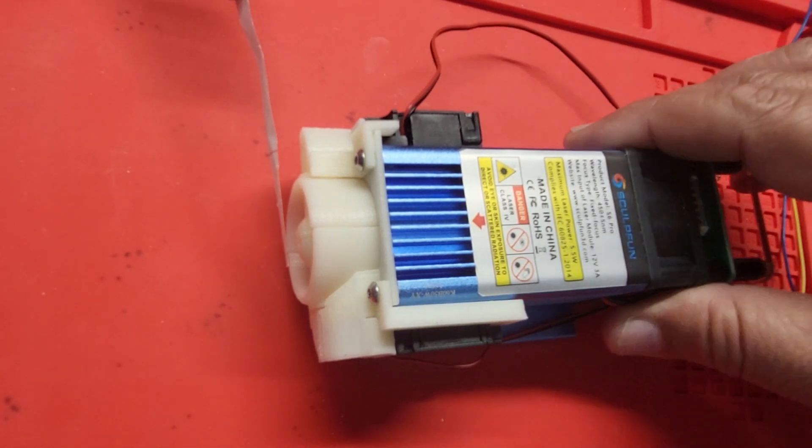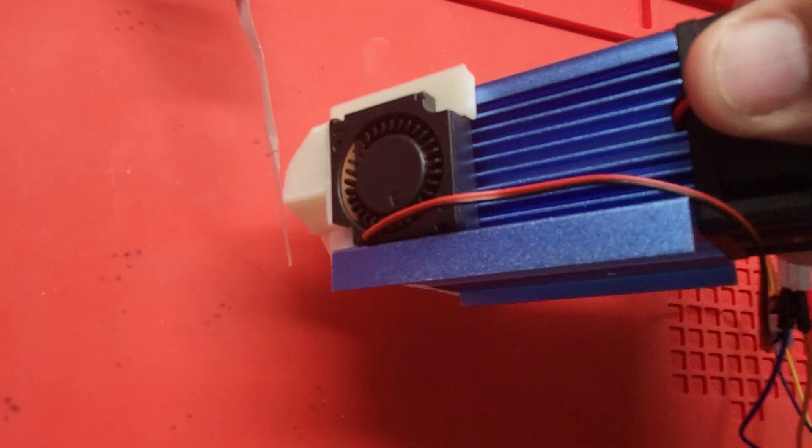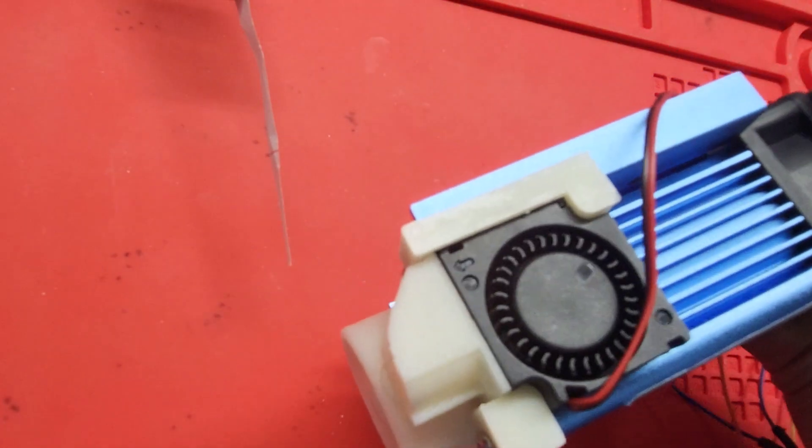So this is how it looks like. That's one fan inside, this is 30 by 30 millimeter by 10 millimeter thickness. So it's one size and this is the other side.